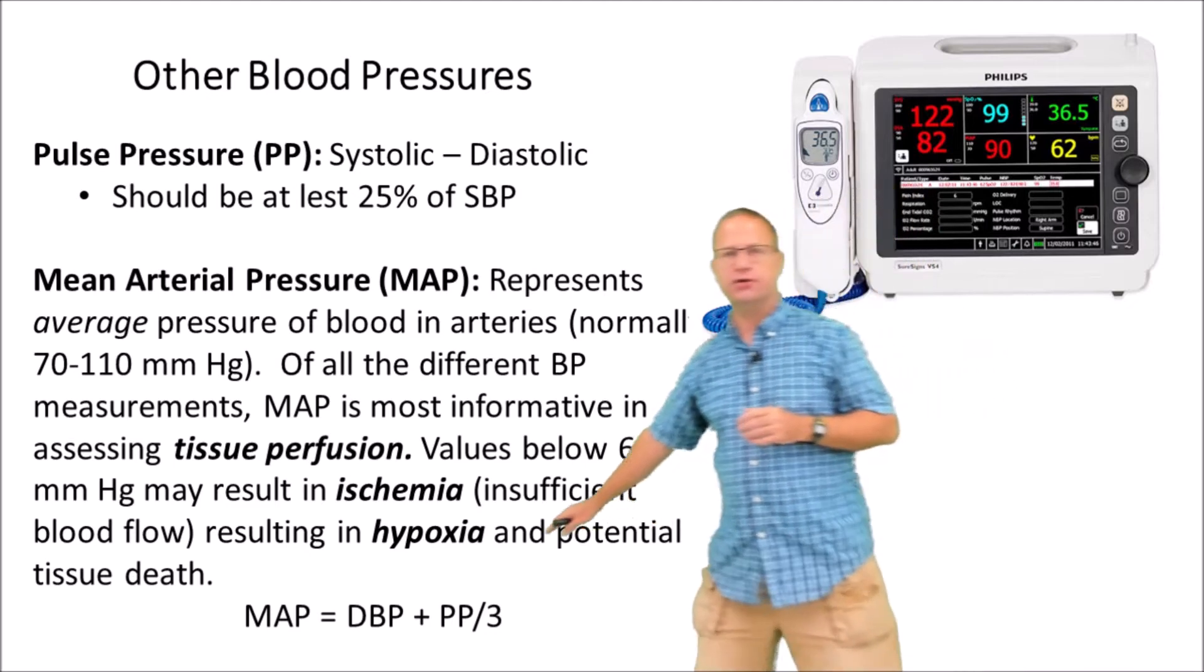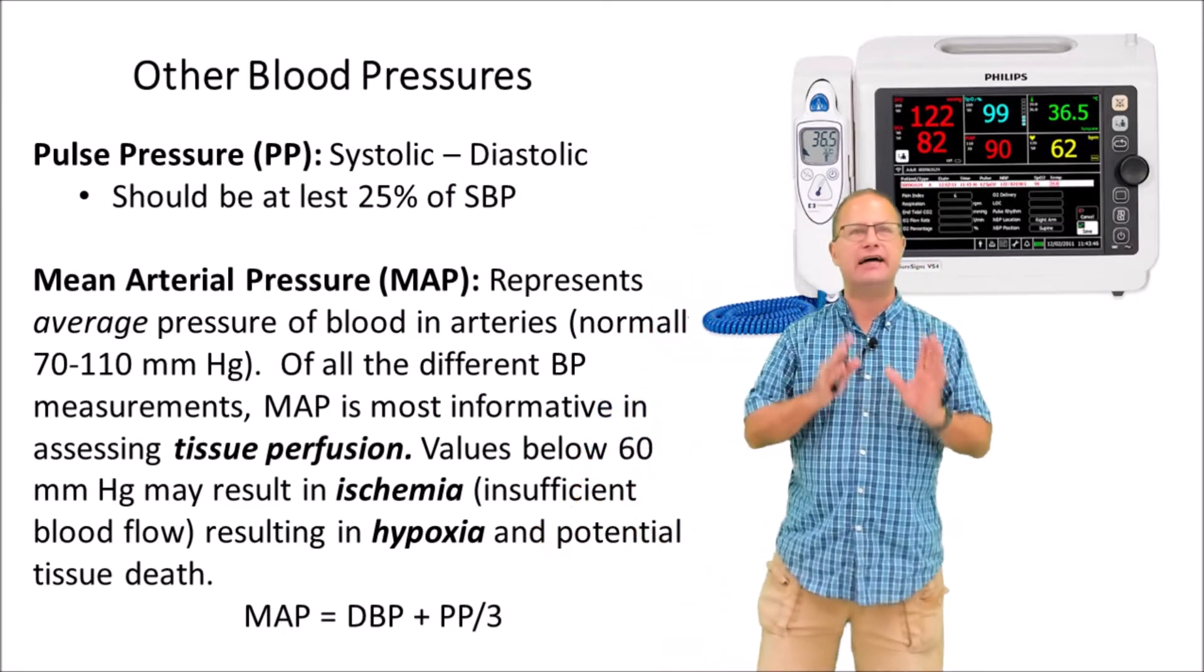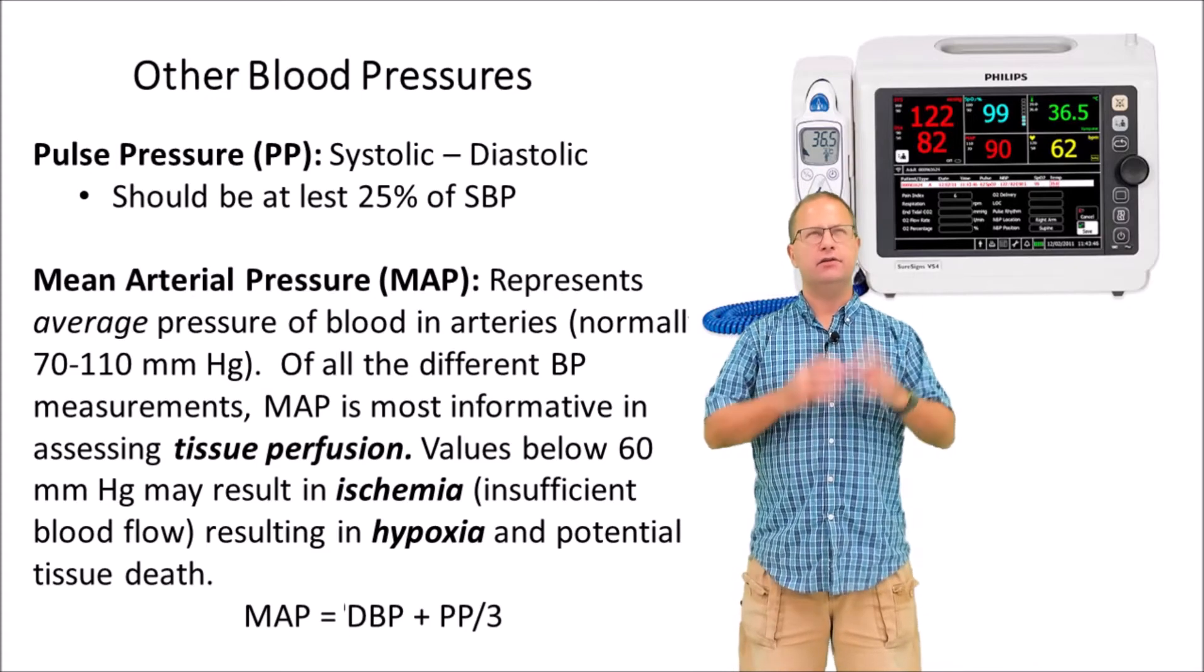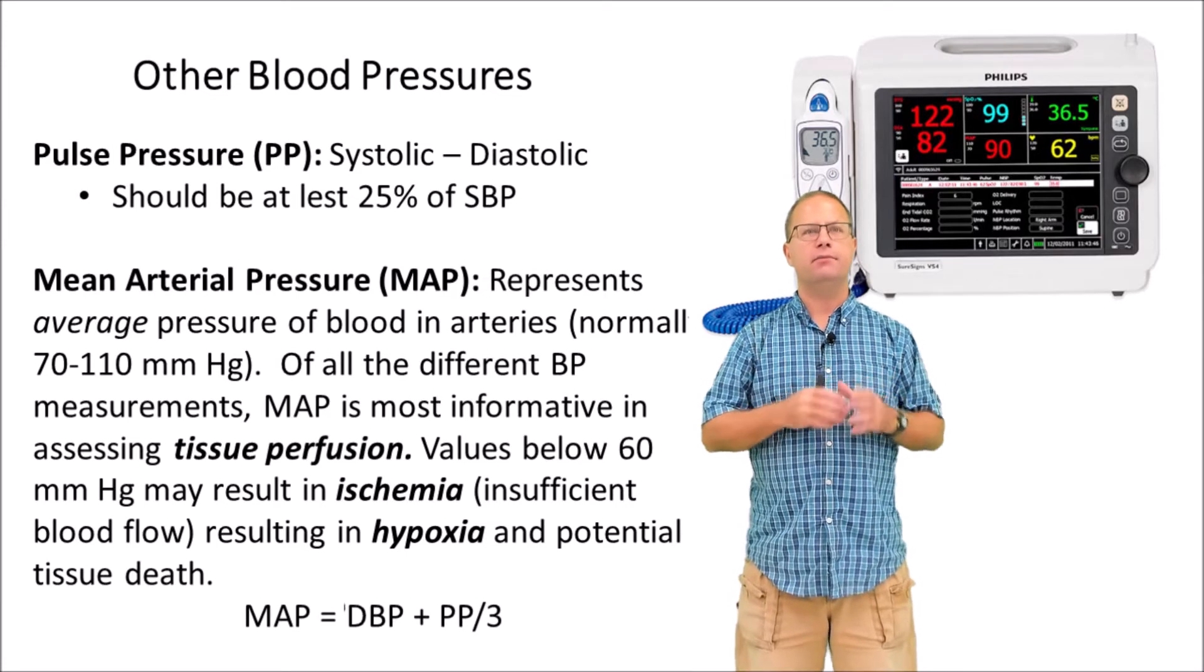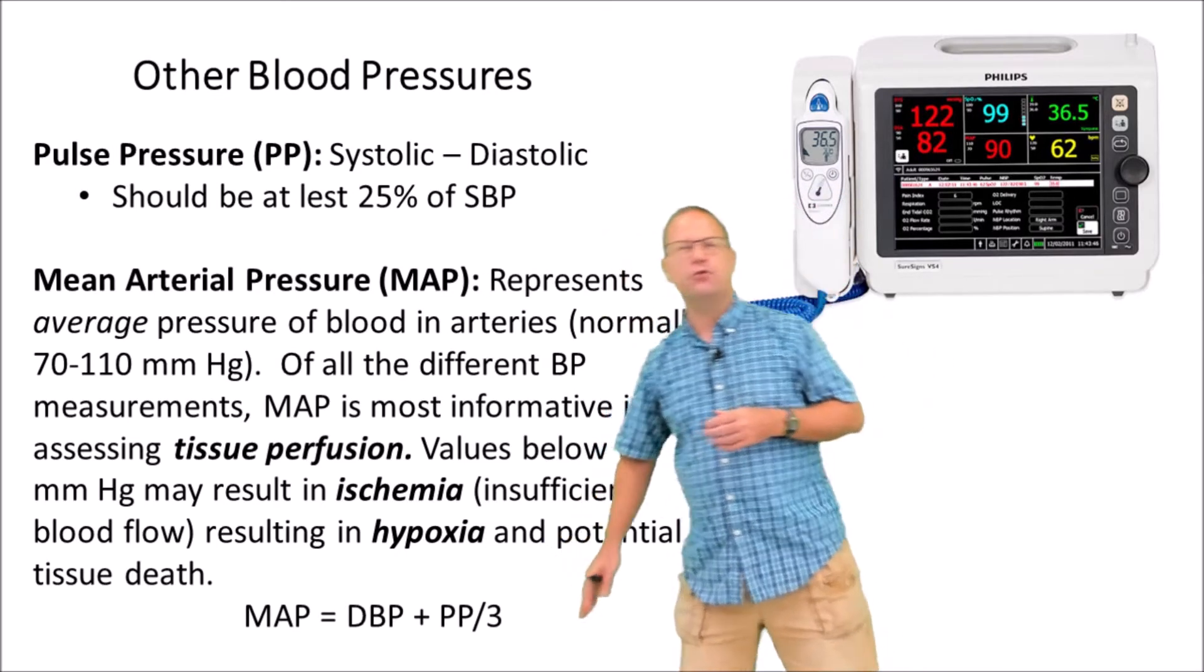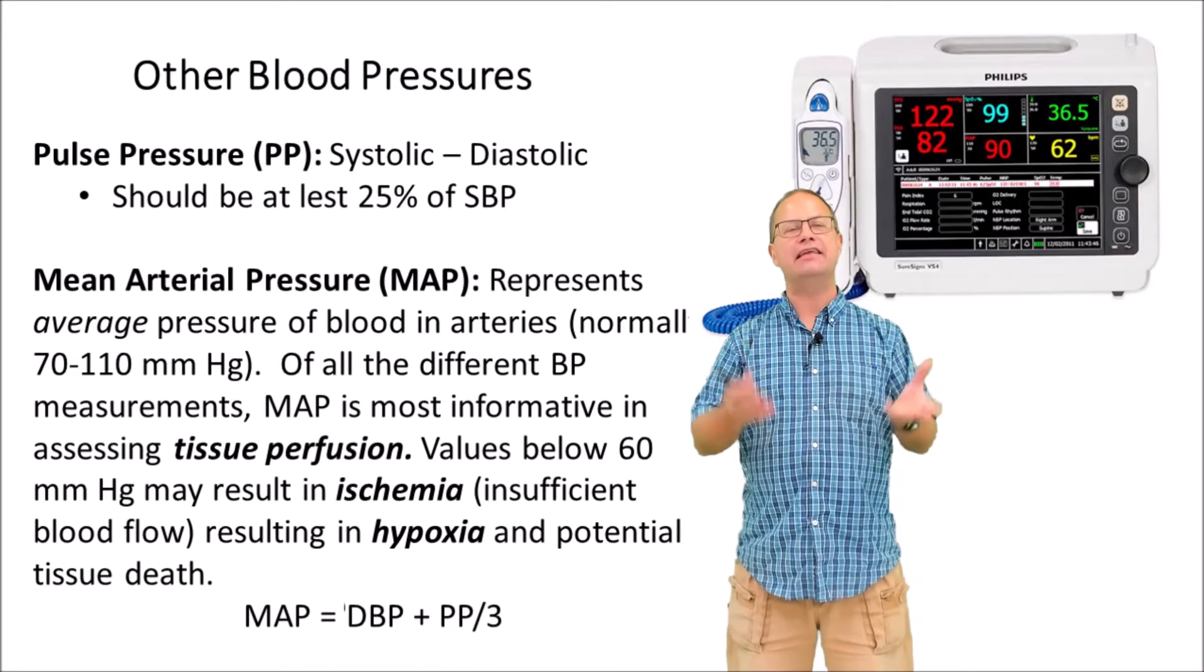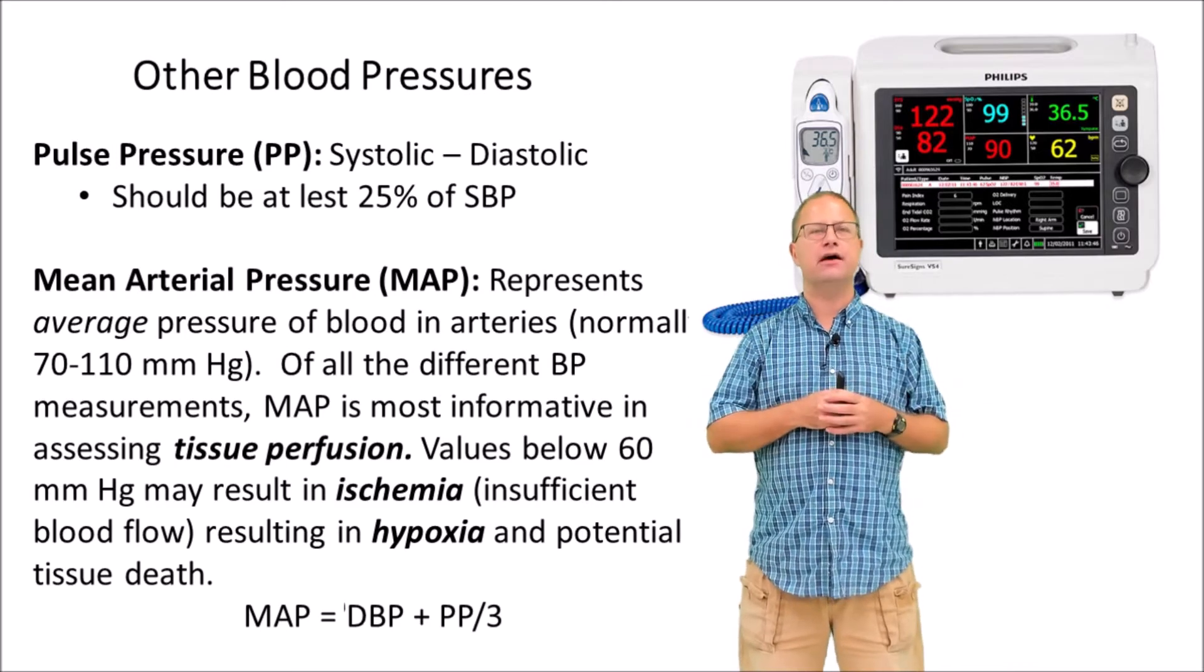To calculate mean arterial pressure, we use this equation right here to estimate it. MAP is simply the diastolic pressure plus one-third of the pulse pressure. Remember, pulse pressure was systolic minus diastolic. So let's do the MAP for somebody with a pressure of 120 over 80. The pulse pressure was 40 millimeters of mercury. We divide 40 by 3, and we're going to get something around 13. We add 13 to the diastolic pressure, and we're going to get somewhere around 93. And 93 is a great number for mean arterial pressure. It indicates adequate perfusion of the tissues.